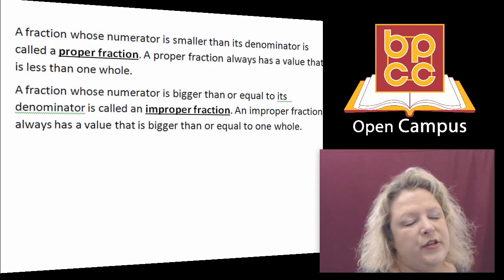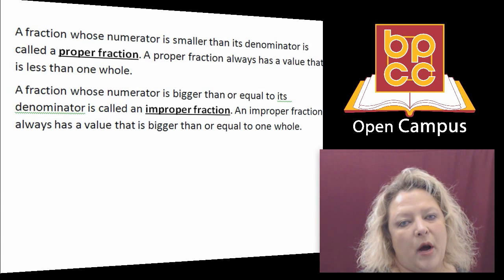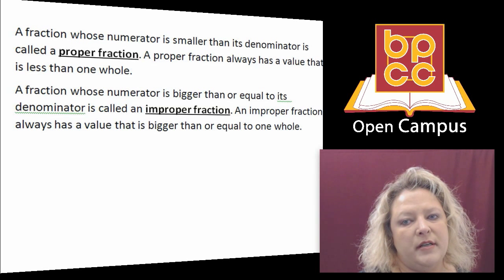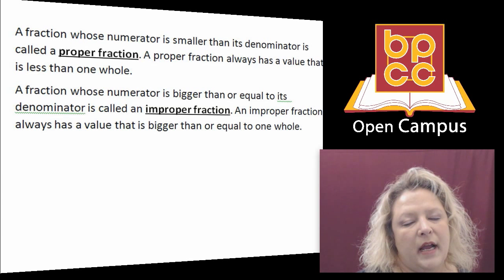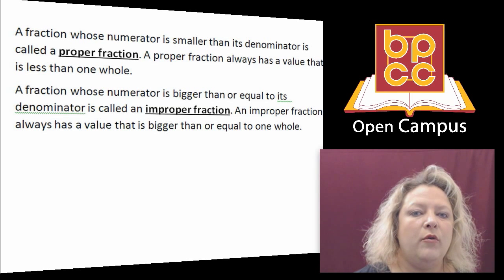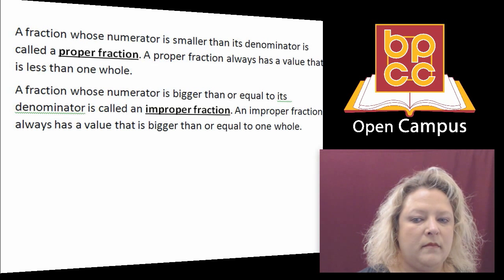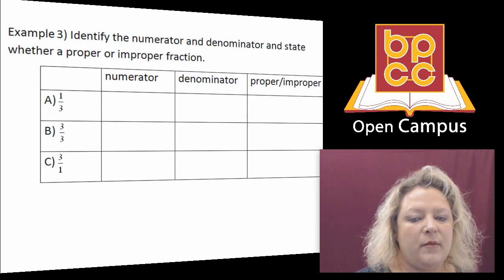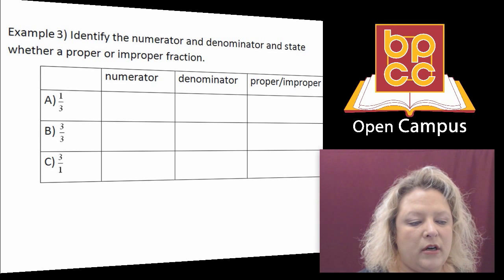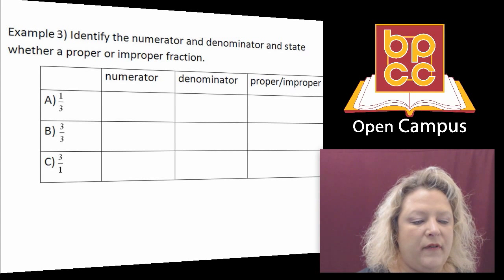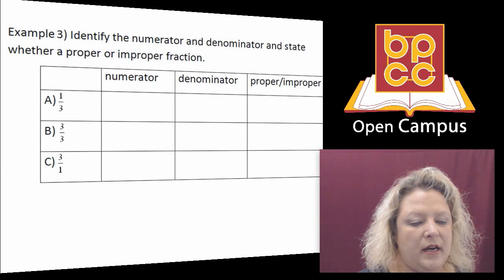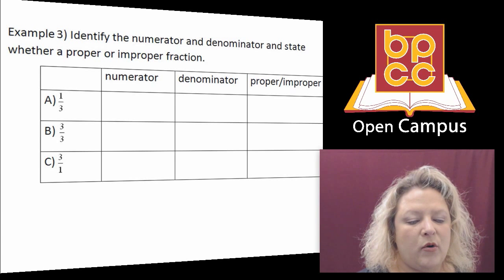Now, there are two different types of fractions. You have a proper fraction where the top number is smaller than the bottom number. And then you have an improper fraction where the top number is bigger than the bottom number. The examples that I'm going to work out for you on the board are on this chart where it asks you to identify the numerator, the denominator, and then tell me if it's proper or improper.